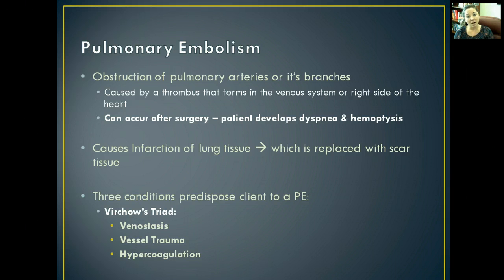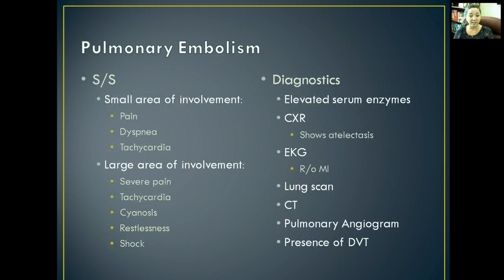The three conditions that expose a patient to a PE involve Virchow's triad: venous stasis, vessel trauma, or hypercoagulation due to altered platelets or clotting factors. The signs and symptoms of a PE — you'll first notice some shortness of breath, then chest pain, and maybe tachycardia. If a large area of the lung gets involved, they'll have severe pain, severe tachycardia, and probably some cyanosis too.